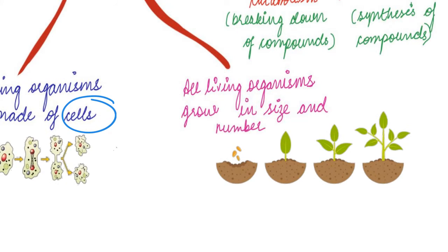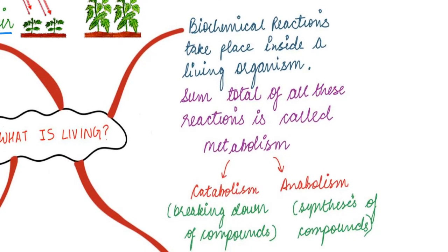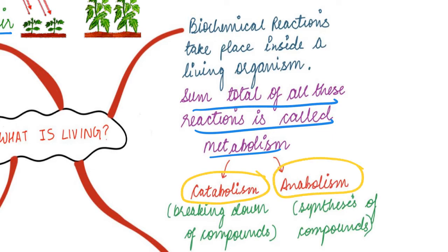The fourth point is that all living organisms grow both in size and in number. And lastly, we talk about biochemical reactions. Biochemical reactions are the sum total of all the reactions taking place inside a body — this is called metabolism. There are two components: catabolism, which refers to reactions that break down compounds, and anabolism, which refers to reactions that cause the synthesis of compounds.